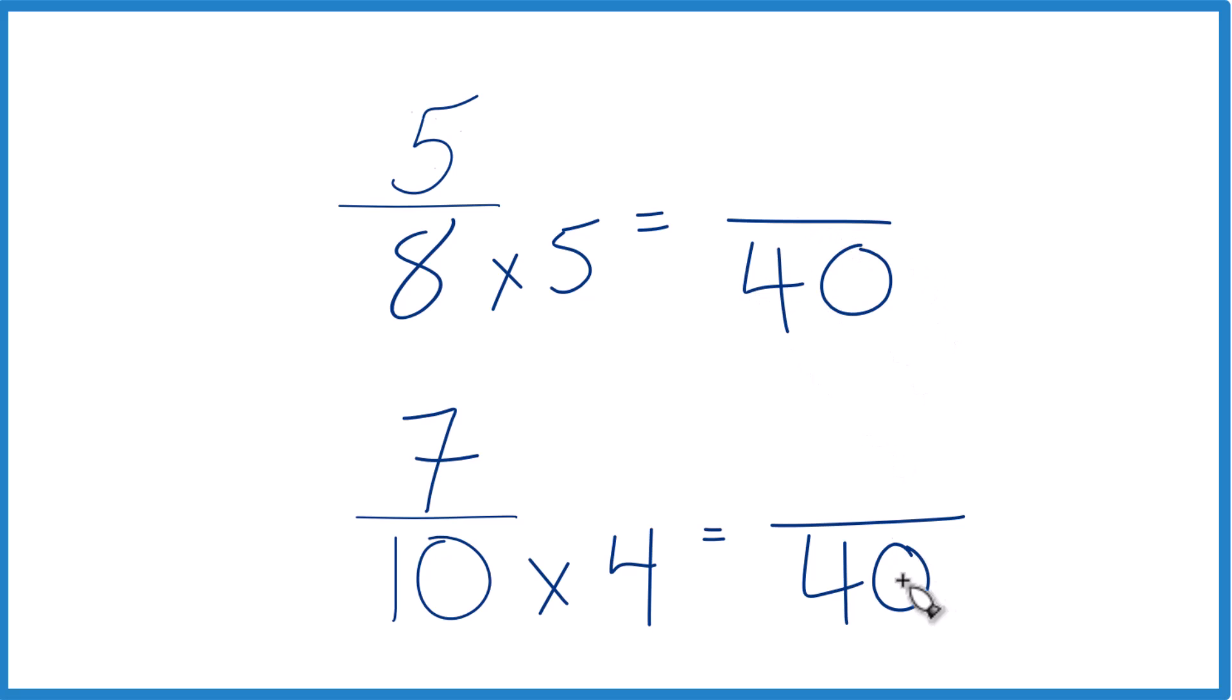So now we have the same denominators, but we just can't multiply the denominator here by 4. We have to multiply the numerator as well. And that's because 4 over 4, that's 1. So we're just multiplying by 1. We don't change the value, just the way it's represented.